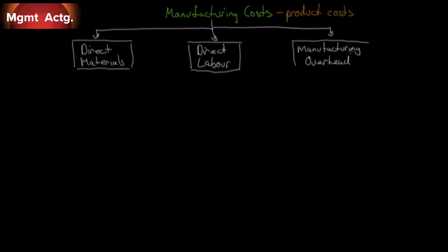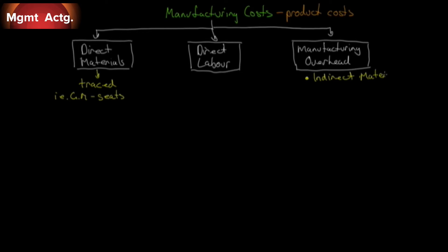For direct materials, we're looking at costs that can be traced to a particular product. Using GM as an example, the seats that go in the cars can be traced — every car has a certain number of seats, the seats cost money, they can be traced. That is a direct material. Some costs cannot be traced; we call those indirect materials. A good example is paint — you don't buy paint in just the size needed for one vehicle. You buy in large quantities and spray it on; some vehicles take more, some less. So it's called indirect because you cannot trace it directly to the product.